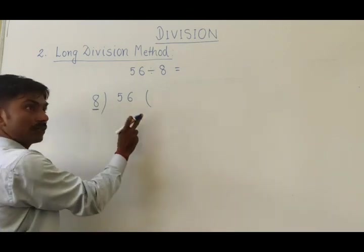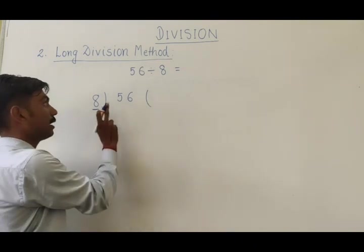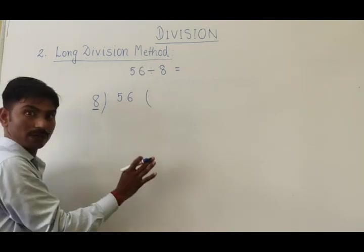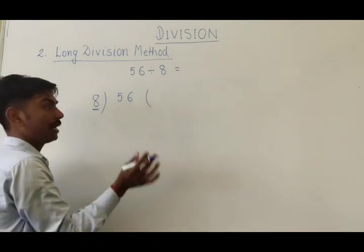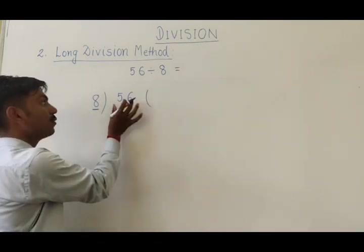So 8×2 equals 16, 8×3 equals 24, 8×4 equals 32, 8×5 equals 40, 8×6 equals 48, and 8×7 equals 56. Means 7 times we are getting 56.